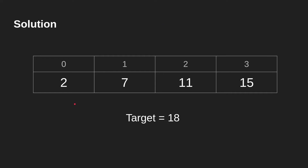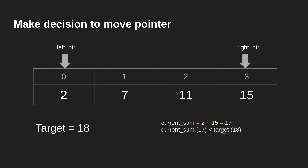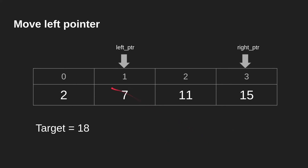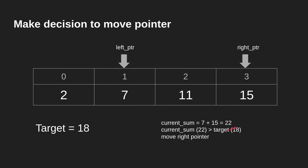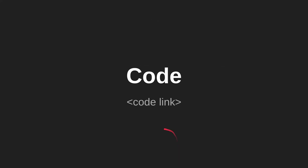Let's visualize the solution. With the array and target 18, we keep left and right pointers. Current sum is 17 (2+15), less than target, so we move left ahead. Sum is now 22 (7+15), greater than target, so we move right. Current sum is now 18 (7+11), equal to target, so we return indices 1 and 2.